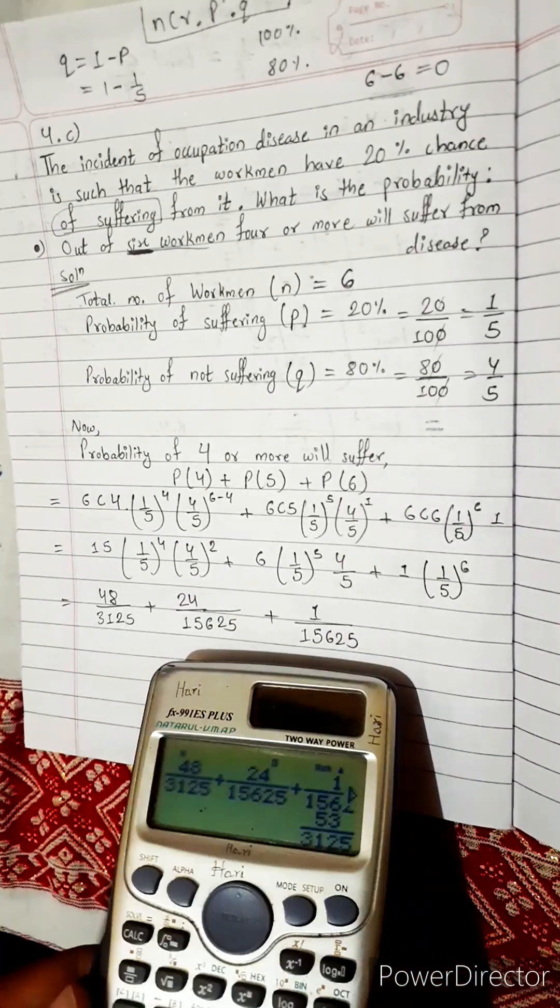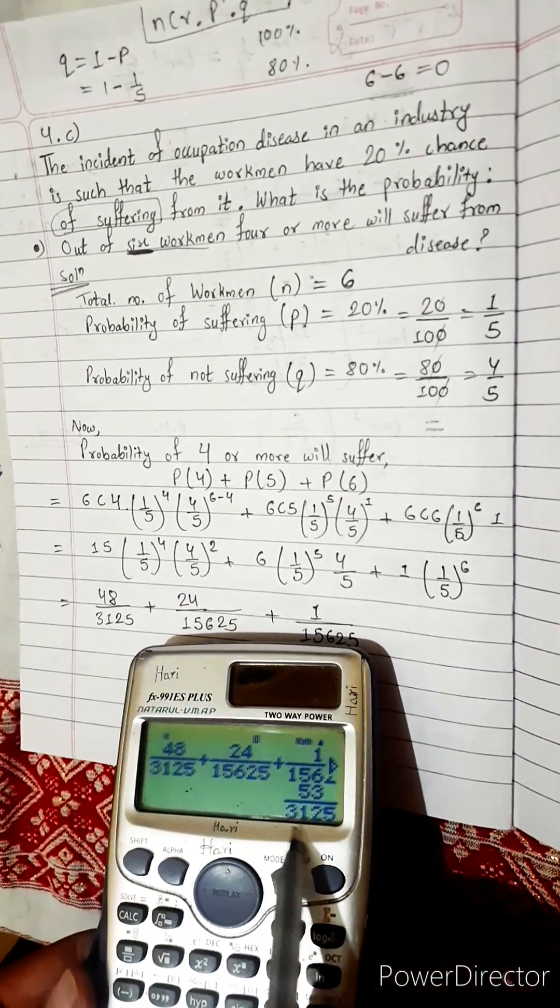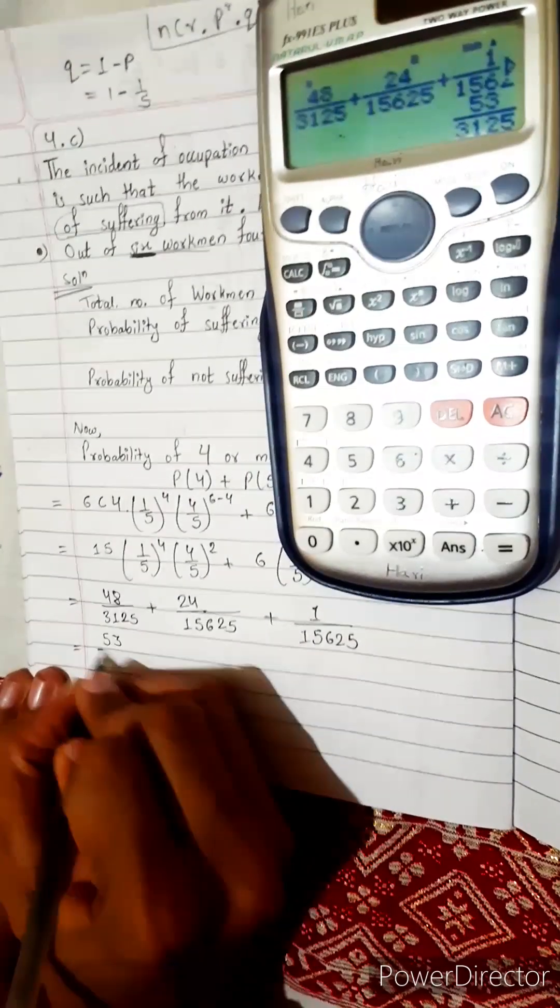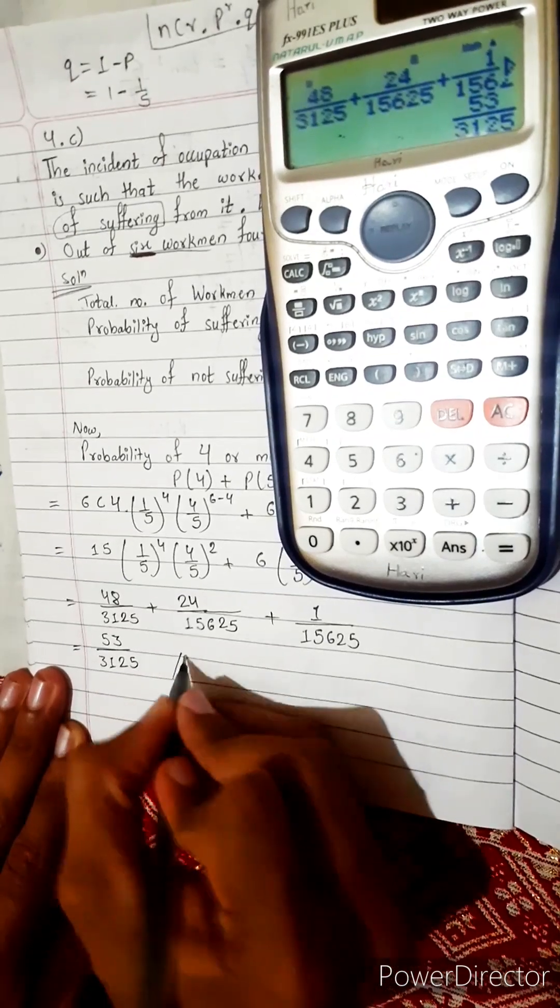Now let's add this all and look what we got for the answer. 53 divide by 3125. This is 53 divide by 3125. This is our answer.